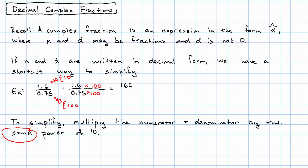So we get one six zero point over zero seven five point. So 160 over 75.